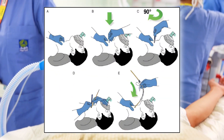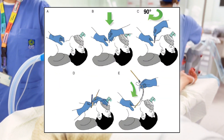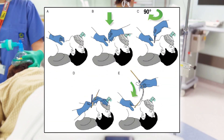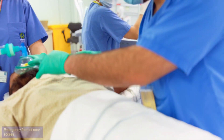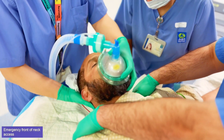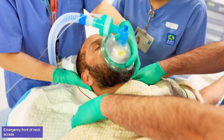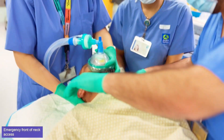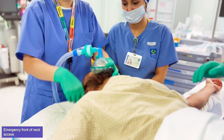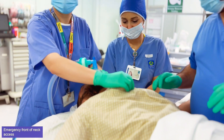Scalpel cricothyroidotomy is the fastest and most reliable method of securing the airway in an emergency setting. Extend the patient's neck by pushing a pillow under the shoulders or by dropping the head of the operating table.